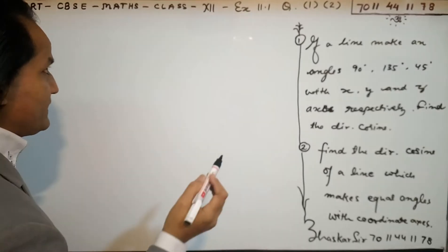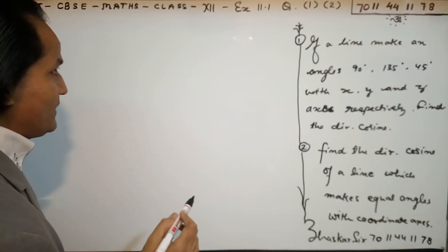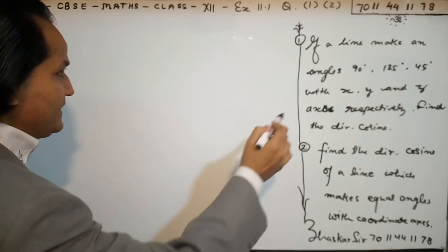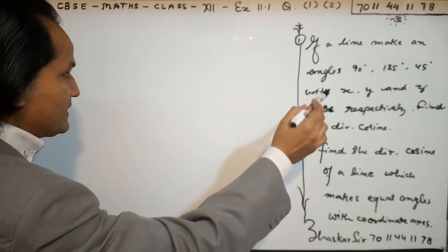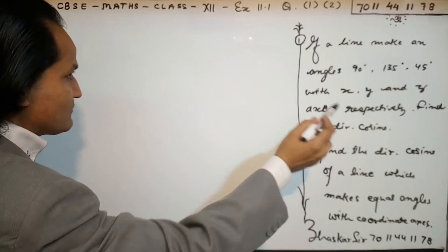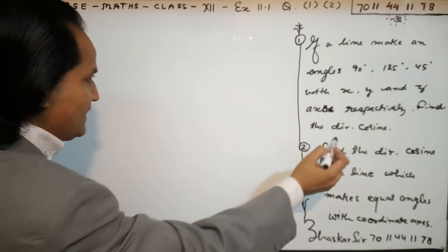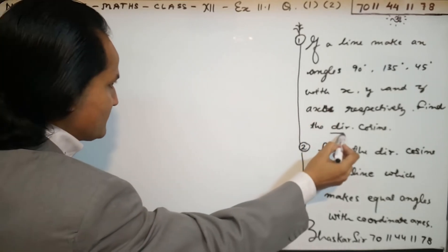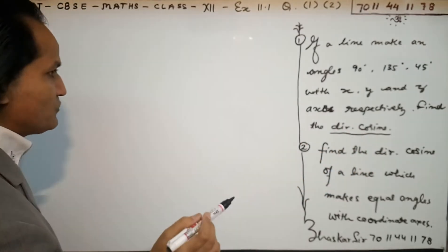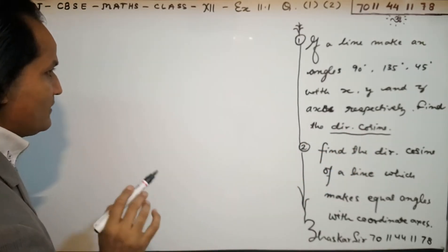Now we are starting question number 1 and 2, exercise 11.1. If a line makes an angle 90 degrees, 135 degrees, 45 degrees with the x-axis, y-axis, and z-axis respectively, find the direction cosines. In the first question we have to find the direction cosines of this line.